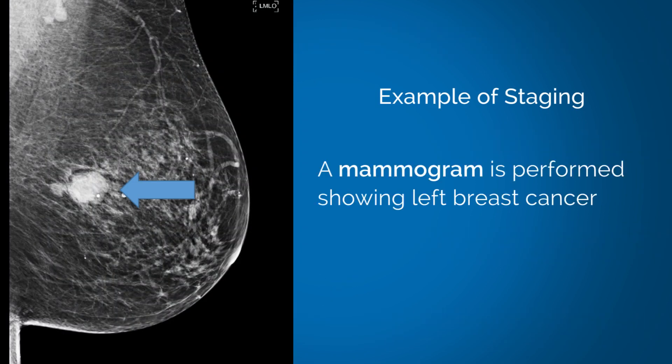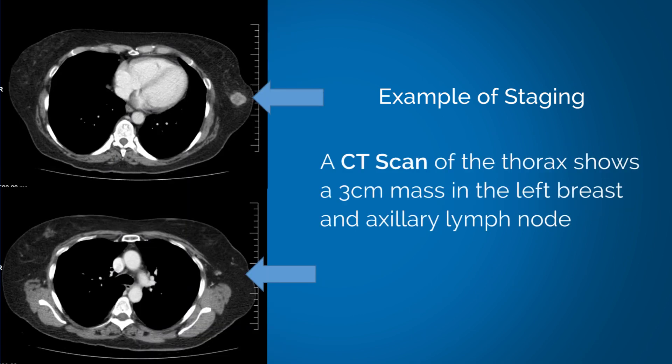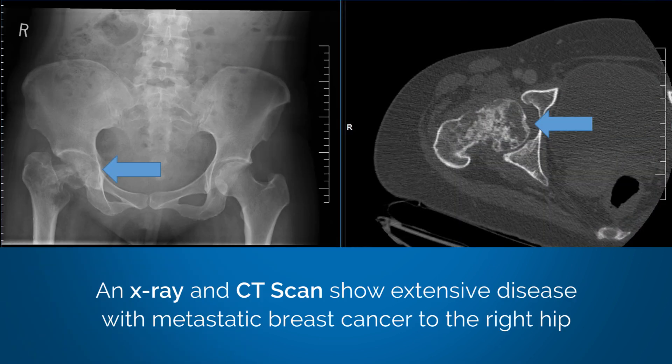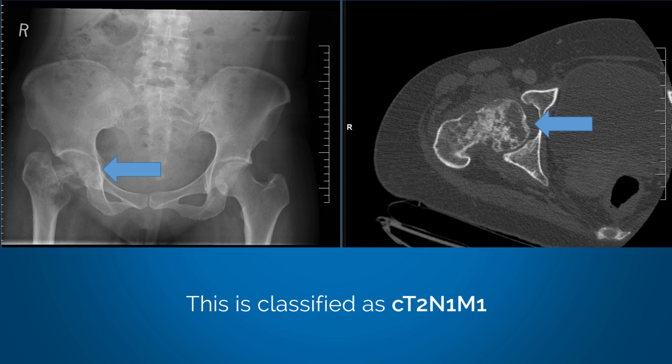For example, a mammogram is performed showing a left breast cancer. A CT scan of the thorax shows a 3 cm mass in the left breast and axillary lymph node. An X-ray and CT scan show extensive disease with metastatic breast cancer to the right hip. This is classified as cT2N1M1.